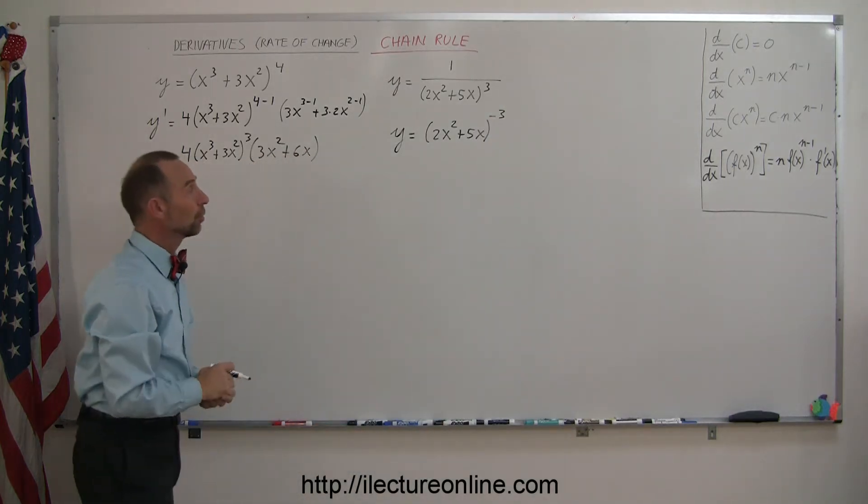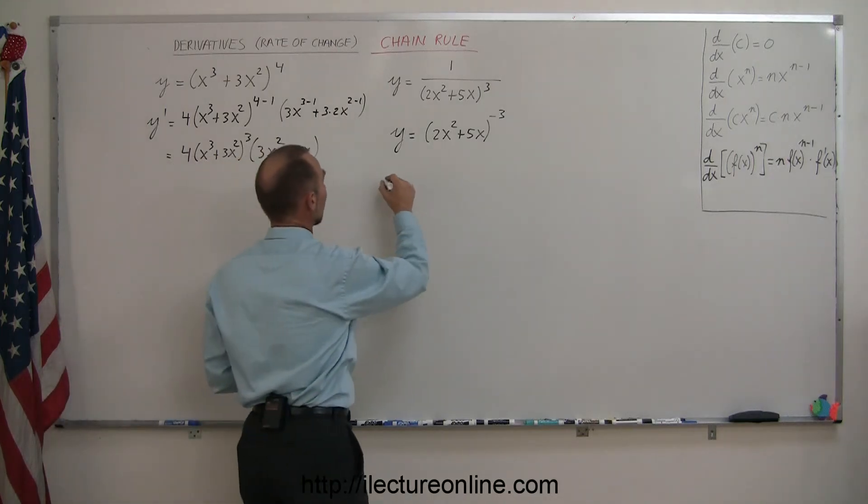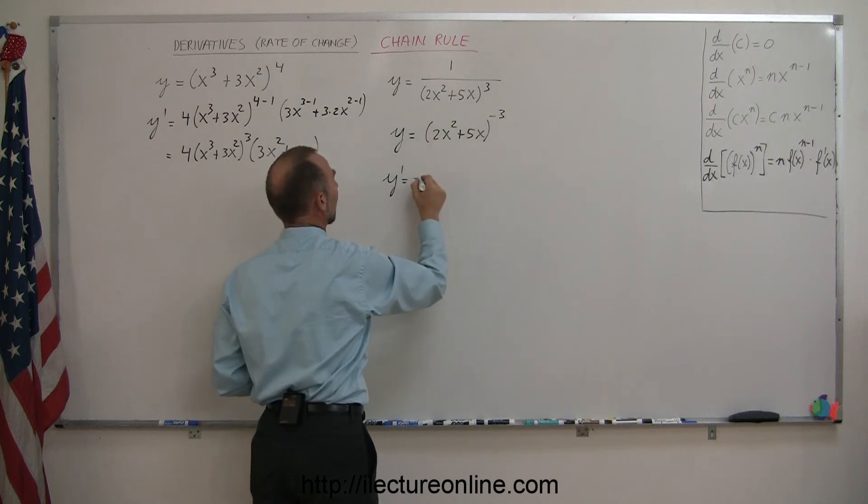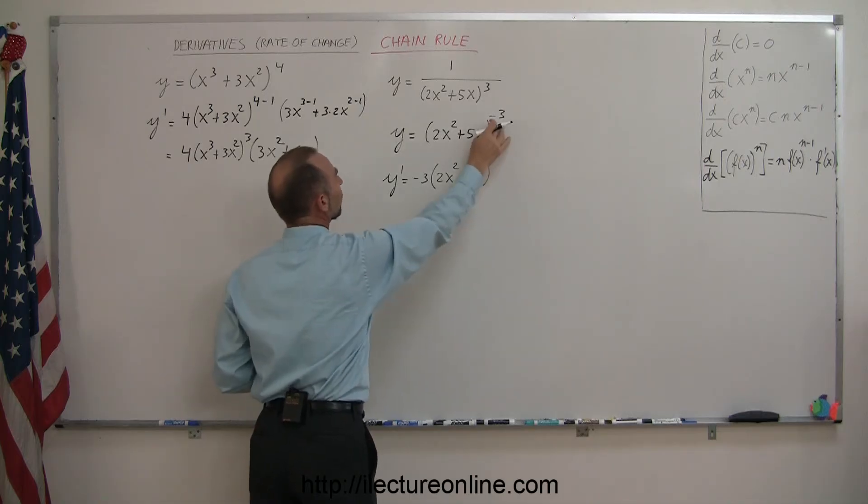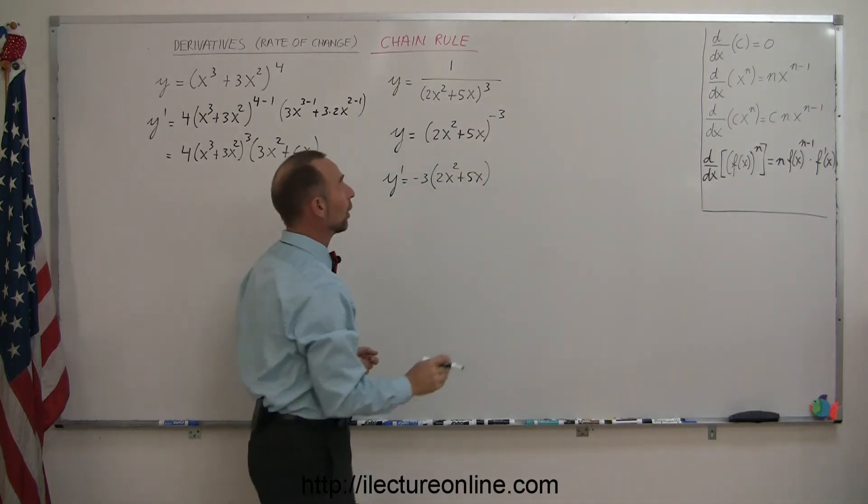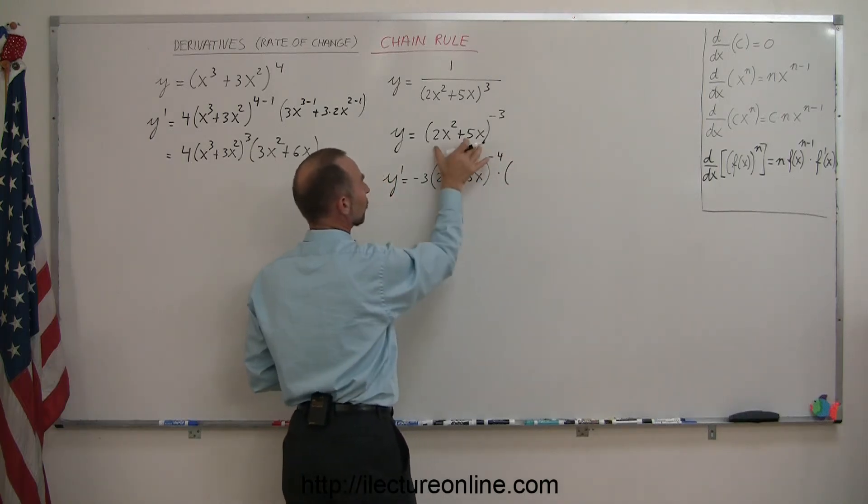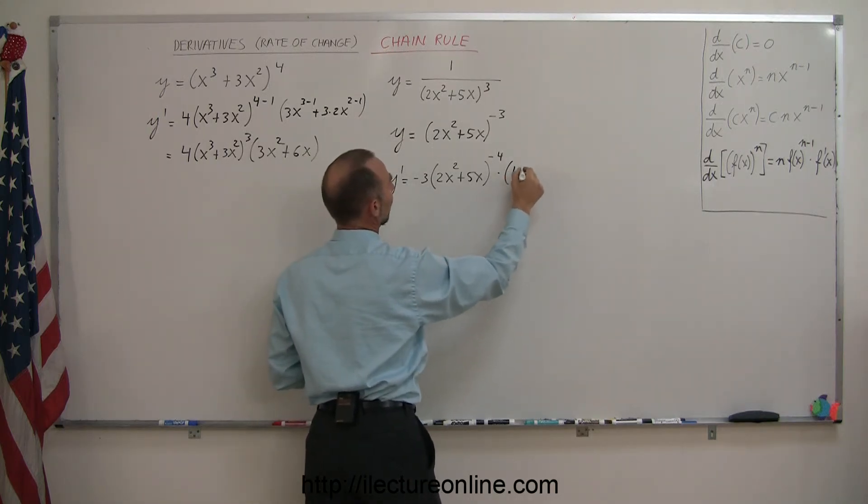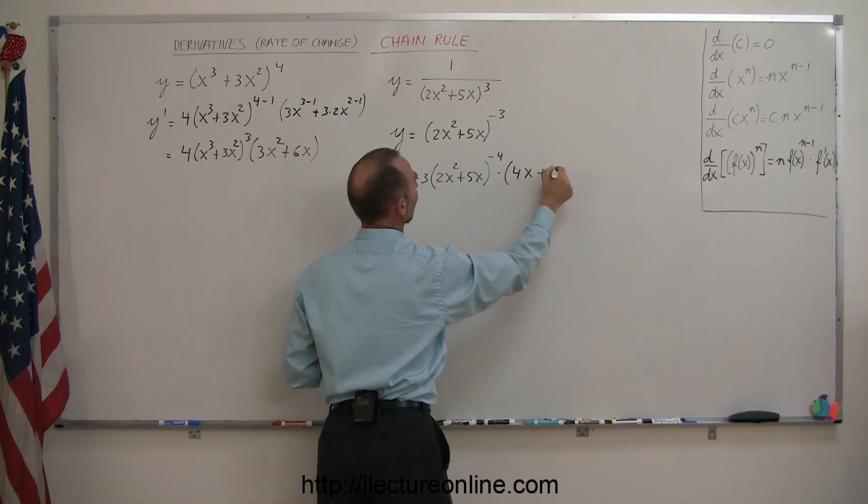And then we use the chain rule in the same way as in our first example. So we then say y prime, which is the derivative of y, is equal to, bring the exponent forward, minus 3 times what's inside, 2x squared plus 5x to the exponent minus 1. We can do that all at once. So minus 3 minus 1 is minus 4 times the derivative of what's inside the parentheses, the function of x inside the parentheses. So that would be 4x to the 1st power plus 5.